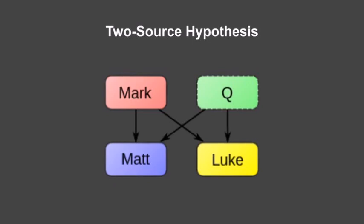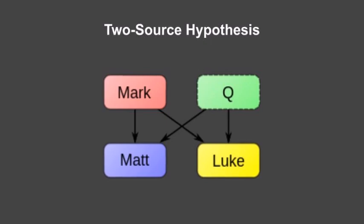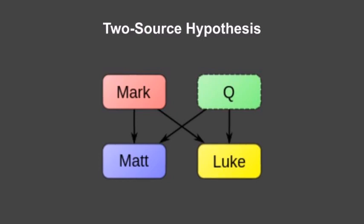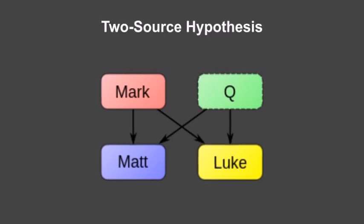The two-source hypothesis additionally posits the existence of a document which we do not possess, called Q, and says that Matthew and Luke also used Q as a source. This is supposed to explain the material common to both Matthew and Luke but absent from Mark. Because it posits that Matthew and Luke worked independently of one another depending upon two different sources, it is called the two-source hypothesis.